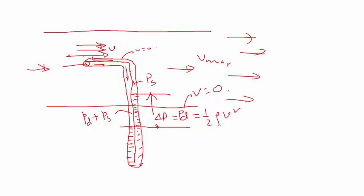So velocity here, rho of the fluid that is flowing. We can also measure this height and the manometer fluid density to calculate the actual pressure. So this delta P